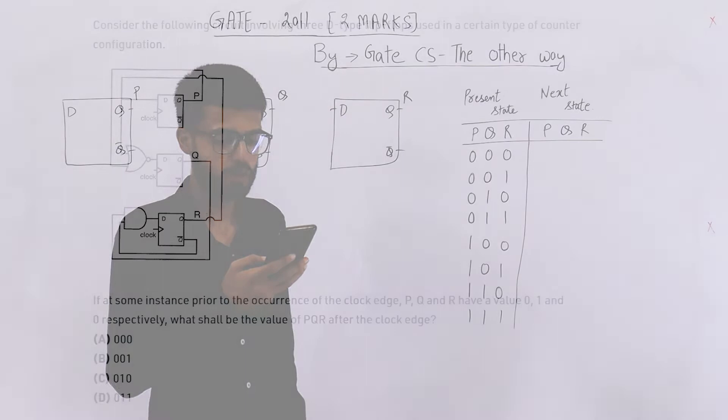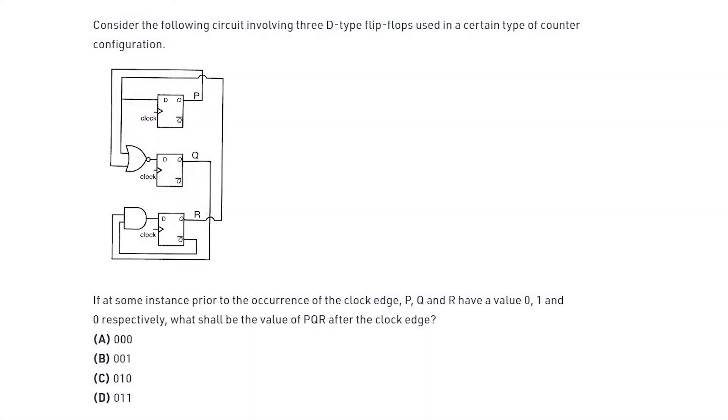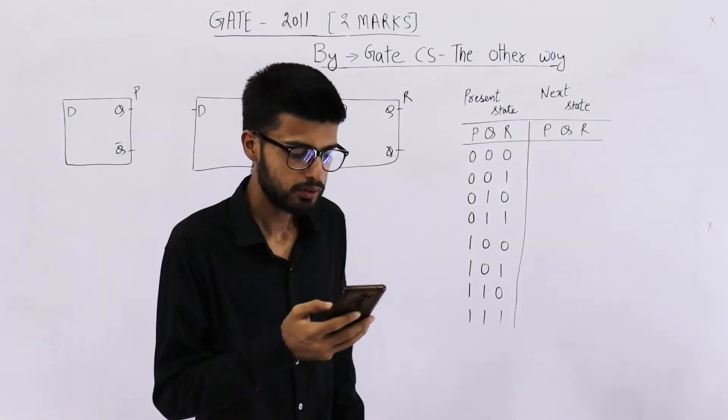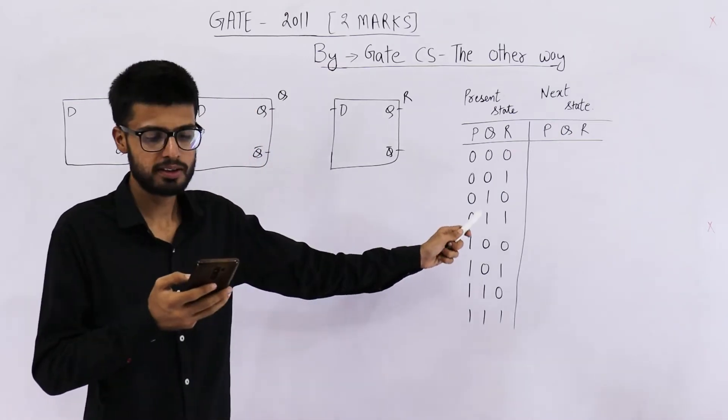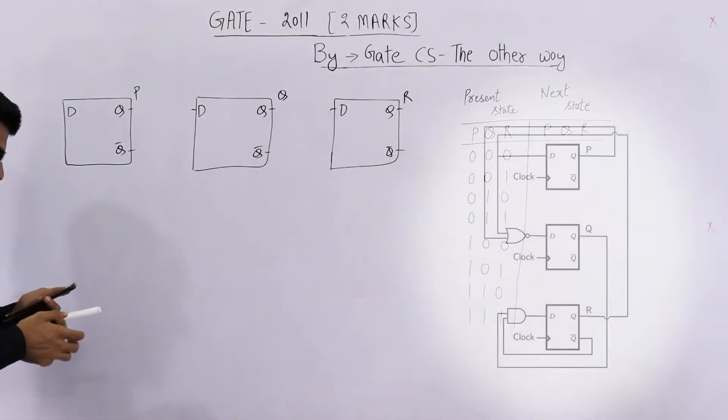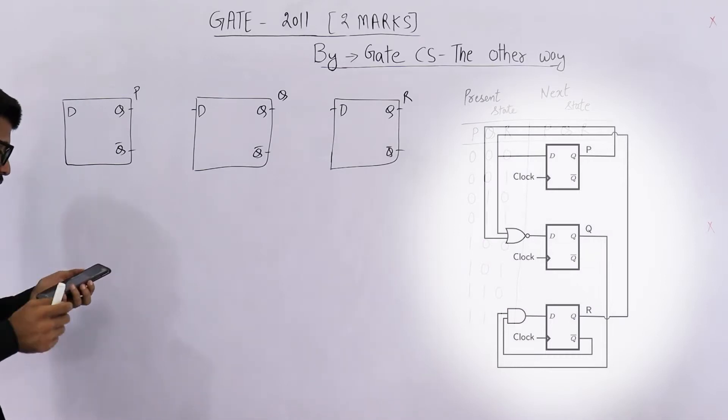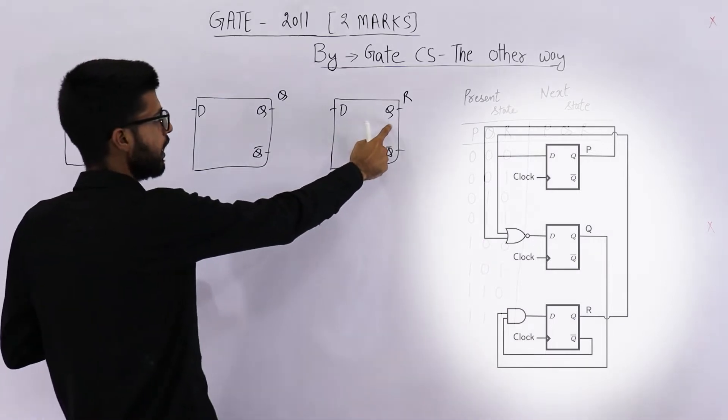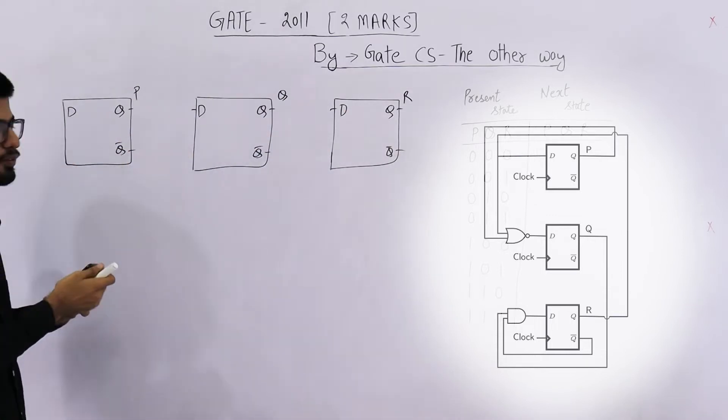Consider the following circuit involving three D-type flip-flops used in certain type of counter configuration. If at some instance, prior to the occurrence of the clock edge, P, Q and R have values 0, 1, 0 respectively, what shall be the values of P, Q, R after the clock edge? So you can see I am displaying this diagram here. Just have a look. Whatever is the output R, this output R is connected to input of the first flip-flop.